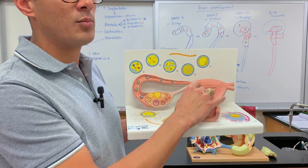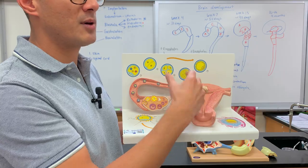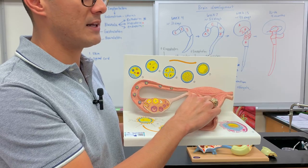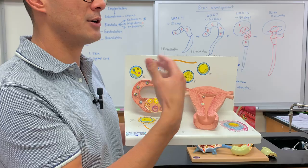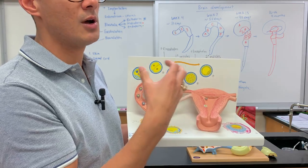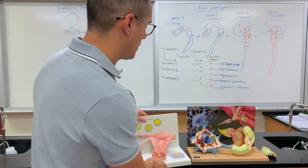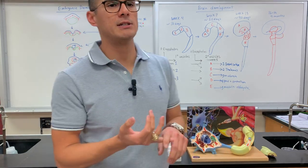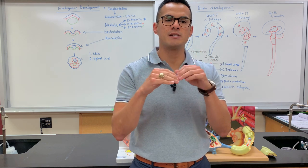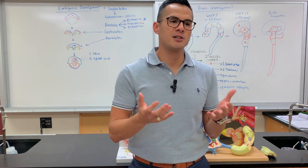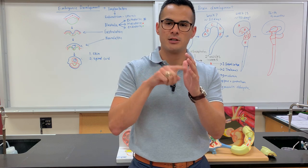The reason I'm bringing up the blastula is because in order for the brain and the spinal cord to develop, it has to start to undergo a process where it starts to fold on itself. These processes are known as gastrulation and neurulation. Gastrulation is when it starts to fold on itself, and neurulation is the process when we actually get the formation of the spinal cord.